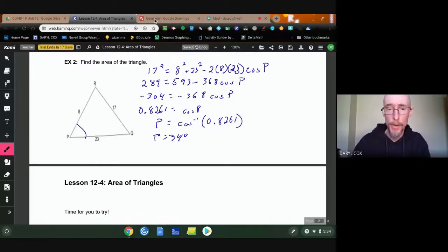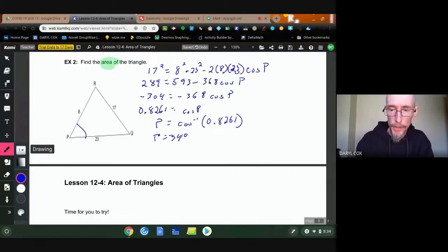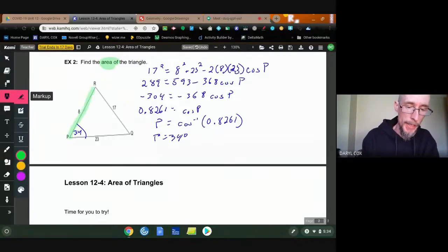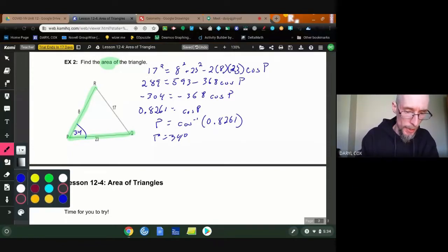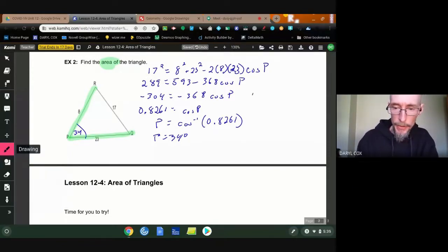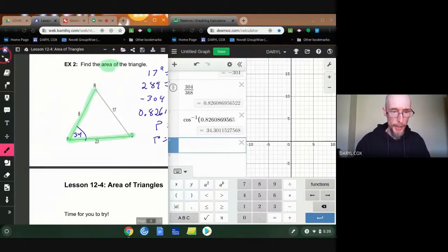Except that's not what we're trying to solve for, right? Because I want the area of this triangle. So I still got a little bit of work to do. So now that I know this is 34 degrees, I need to make sure I choose the correct sides, okay? So I need to choose the 8 and the 23 because they're the sides that make the angle I know. So I'm going to say my area, I'm going to change color so we can see it a little nicer here. My area will equal one half of 8 times 23 times the sine of 34.